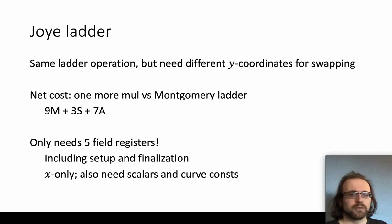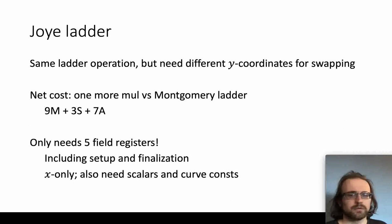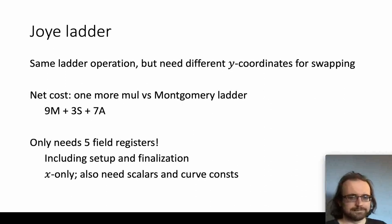There is also a new formula for the Joie ladder. As remarked earlier, the Joie ladder uses the same ladder step as the Montgomery ladder; however, the point representations must differ slightly because you swap P and Q instead of Q and R. In particular, you can't just store a y coordinate for P without one for Q. Computing that extra y coordinate costs, after simplifications, one extra multiply. So the Joie ladder is slightly less efficient than the Montgomery ladder, but uses less memory — in fact less memory than any other prime-field elliptic curve formulas I'm aware of — only five field registers plus scalars and curve constants.